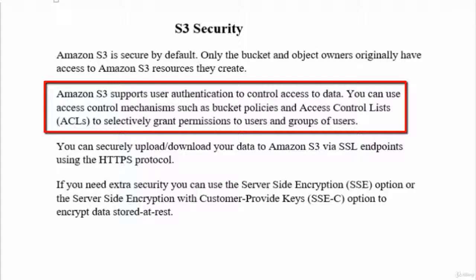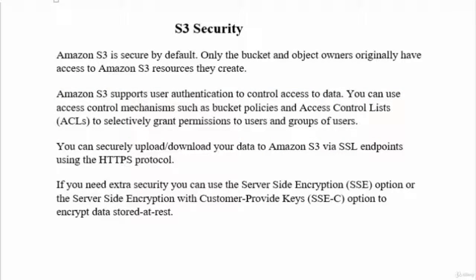You can use access control mechanisms such as bucket policies and ACLs to selectively grant permissions to users and groups of users. For example, you can create a group in IAM and give that group read-only permission to your bucket, so they will be able to see the objects within your bucket but cannot modify or harm any of them.